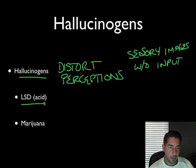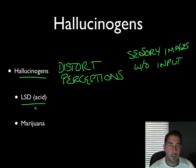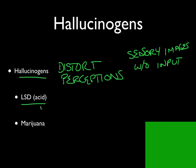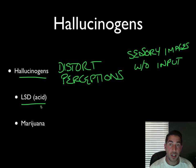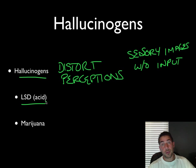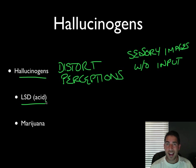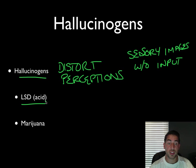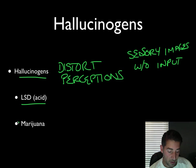LSD is a very popular hallucinogen — also called acid. The thing with LSD and hallucinogens is that when you start to hallucinate, the experiences can be very emotional. They can range from euphoria towards extreme excitement, happiness, relaxation, and detachment — you can feel completely at ease. But you can also feel panicked and depressed, because these emotions feel very real even though there's no sensory input.